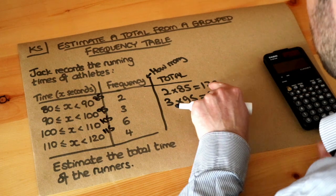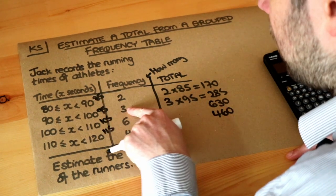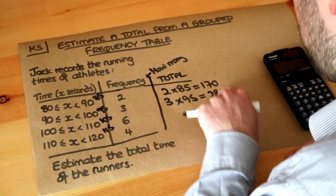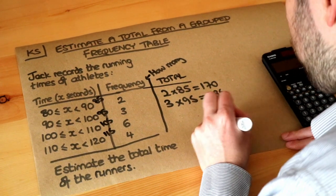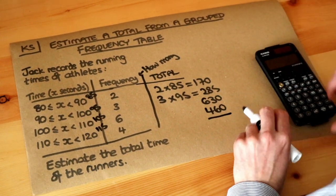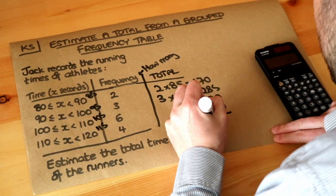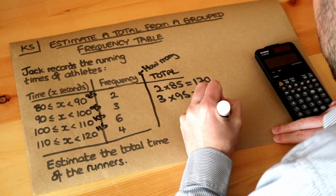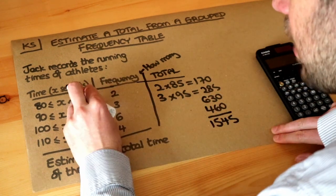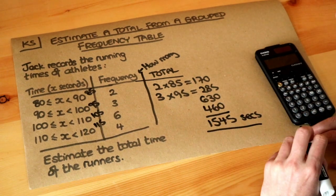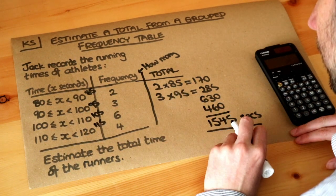So we've estimated the total time of these two athletes, the total time of these three athletes, etc. We've got those total times, and we want to find the grand total of all those times. So now we just need to add those together, and we get 1,545. And what was the unit? It was seconds, so I'm just going to put 'sec' for short. And that is the final answer. Thank you.